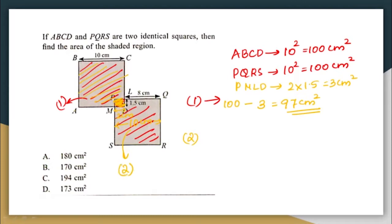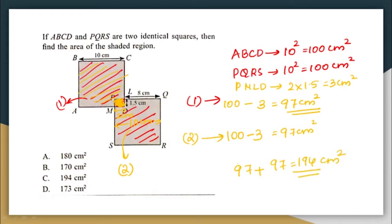Similarly for region 2: the area of square PQRS is 100 cm², subtract 3 cm², giving again 97 cm². So the total area of the shaded region is 97 plus 97, which equals 194 cm². The correct answer is option C. In olympiad examinations, the approach to questions is very important — solve using easy methods to arrive at the answer faster, since speed matters more than writing out every step.